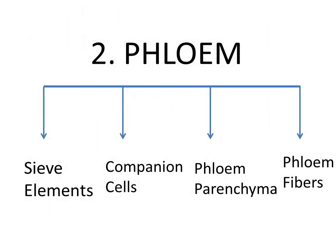Hello everyone, today I am going to tell you about phloem and its components. Phloem is the second type of complex or compound tissues; it makes up the vascular tissue of plants with xylem. It helps in translocation of organic material from the leaves to the different parts of the plants, like stem and flowers.